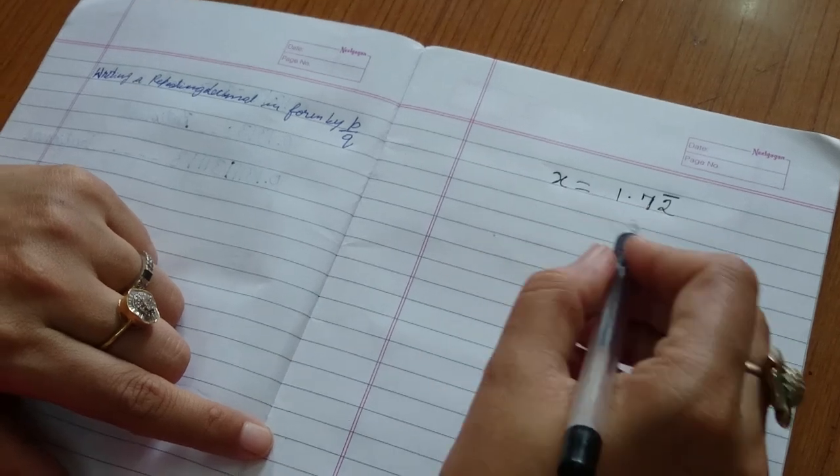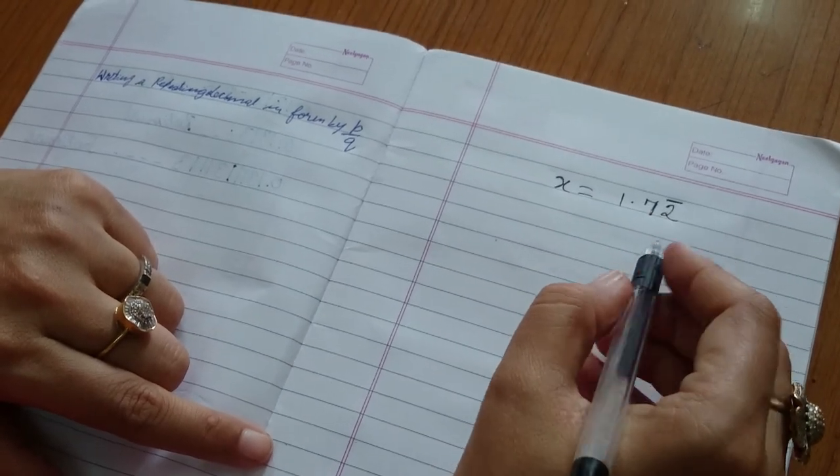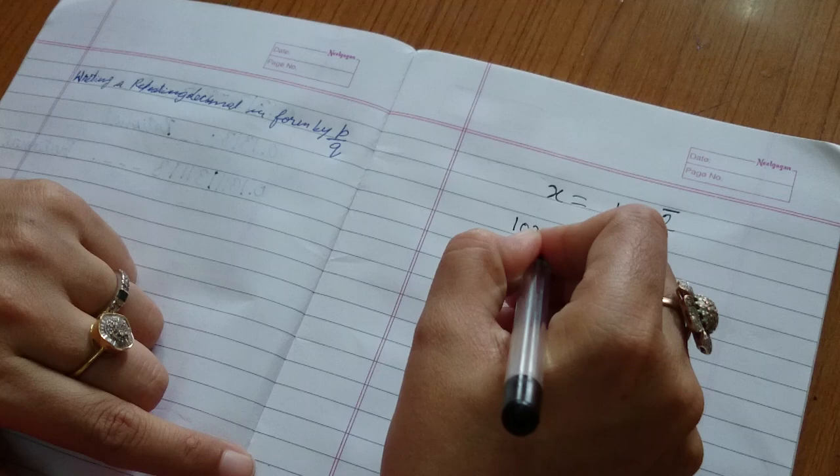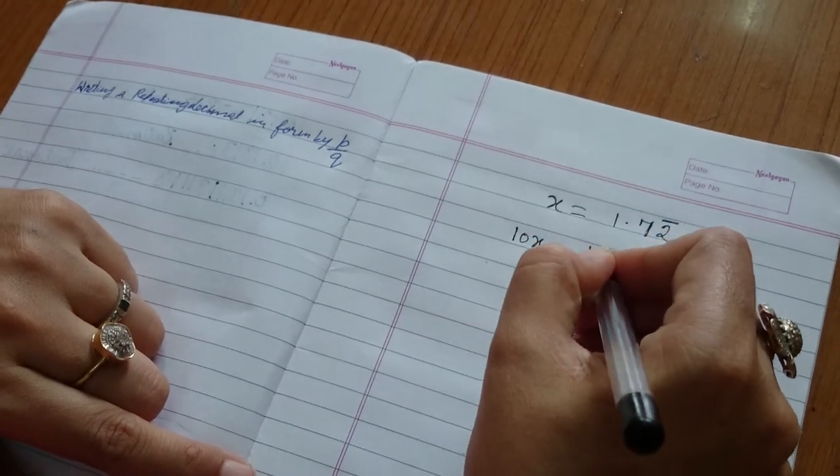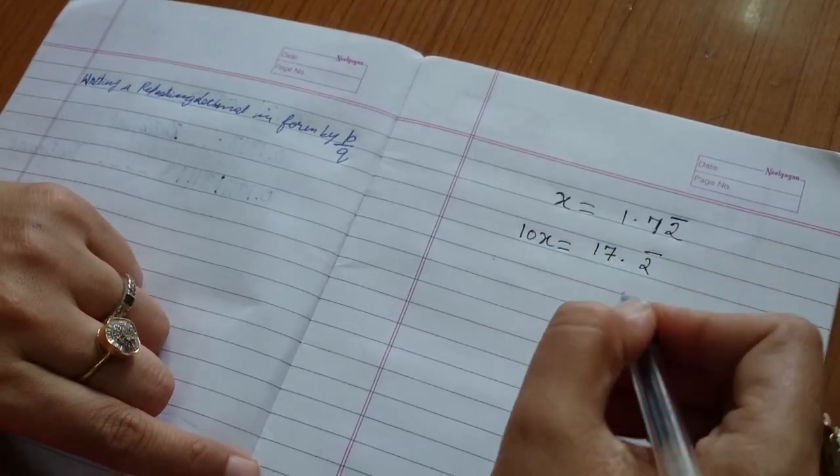First of all we will multiply both the sides by 10. So we get 10x is equal to 17.2 bar.